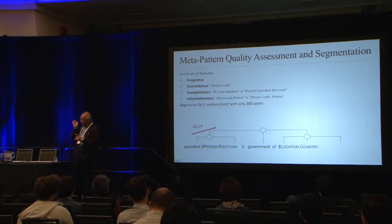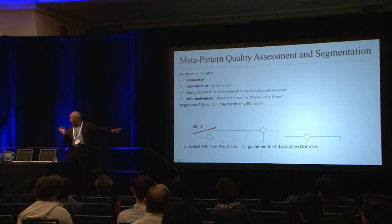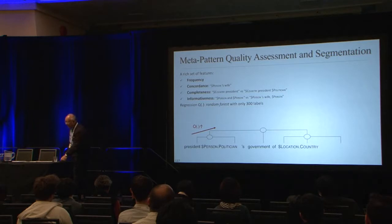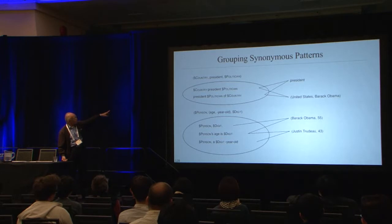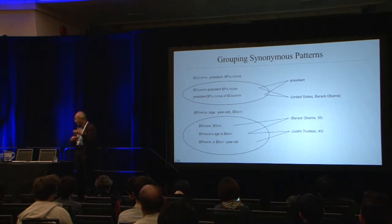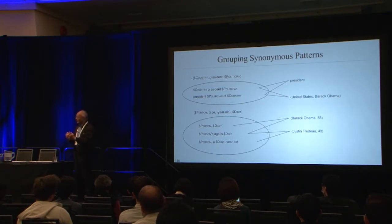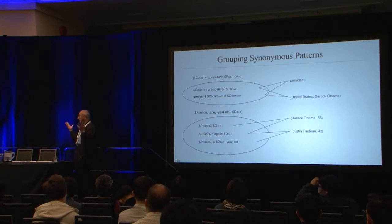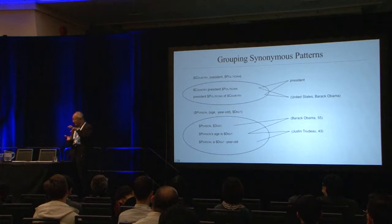Once you find the right boundaries, you can do synonymous pattern grouping. How do you know they have the same meaning? Because there are so many instances. Consider 'U.S. President Barack Obama' — there are so many ways to say it: 'President Barack Obama of United States of America,' 'Barack Obama, U.S. President,' and many others. Since it repeats so many times, you know they are the same.